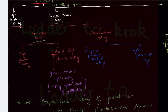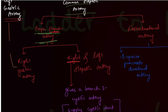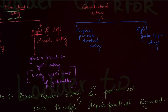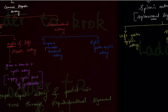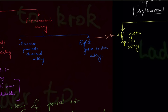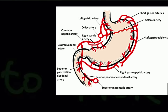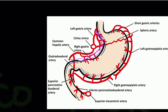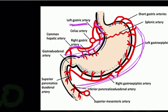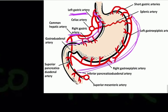The anastomoses in the stomach: first, between the left gastric artery and the right gastric artery — they meet at the small curvature of the stomach. Second, between the right gastroepiploic artery and the left gastroepiploic artery — they anastomose at the greater curvature of the stomach. As you can see in the picture, the left gastric artery meets the right gastric artery at the small curvature, and the gastroepiploics meet at the greater curvature.